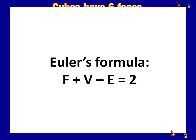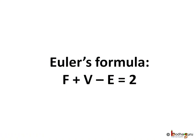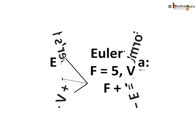There is a relationship between the number of faces, edges, and vertices. It is F plus V minus E equals 2, where F is the number of faces, V is the number of vertices, and E is the number of edges. This is called Euler's formula.